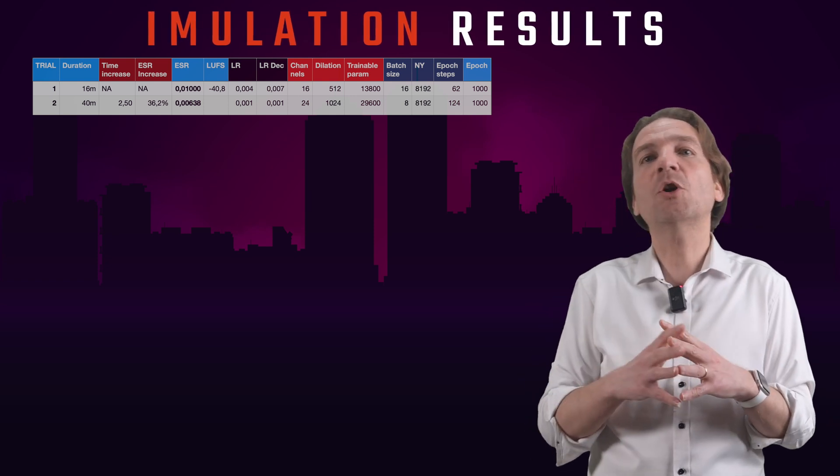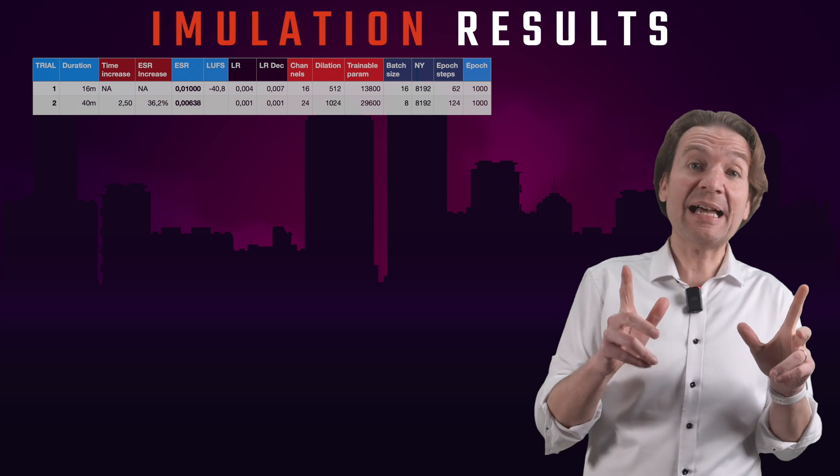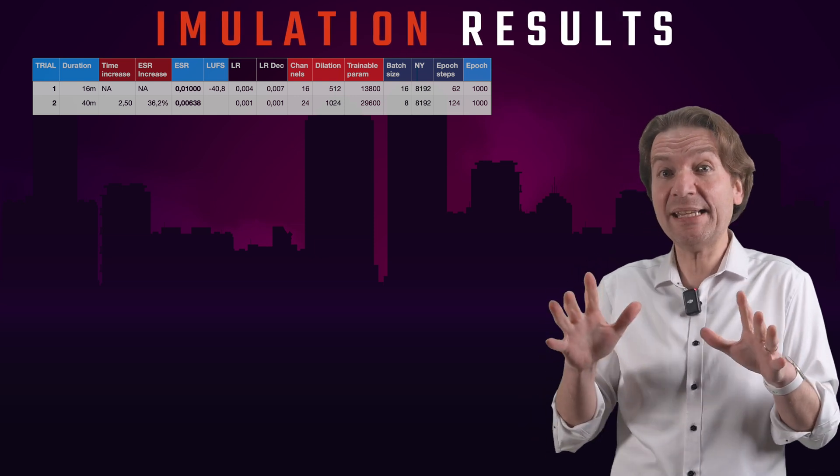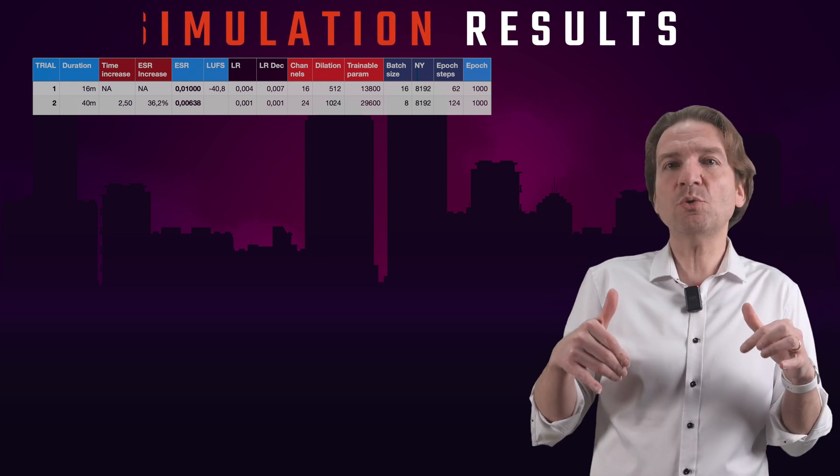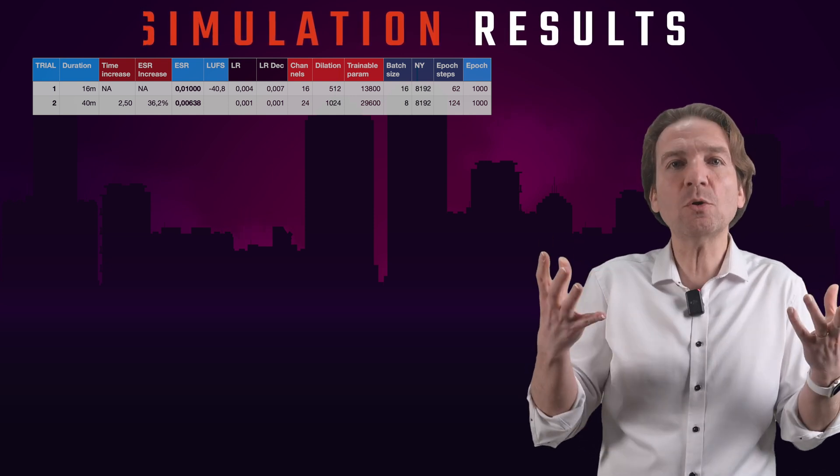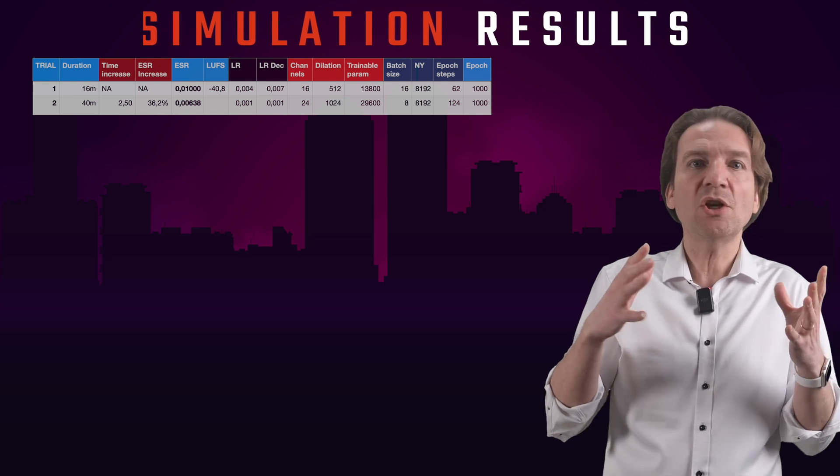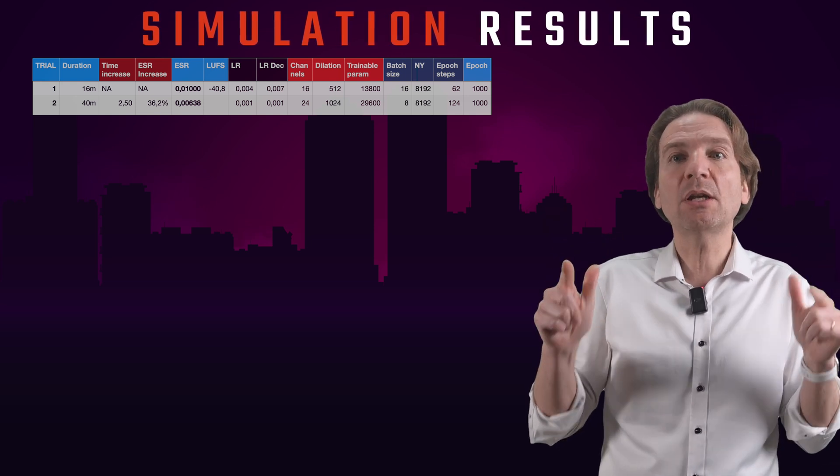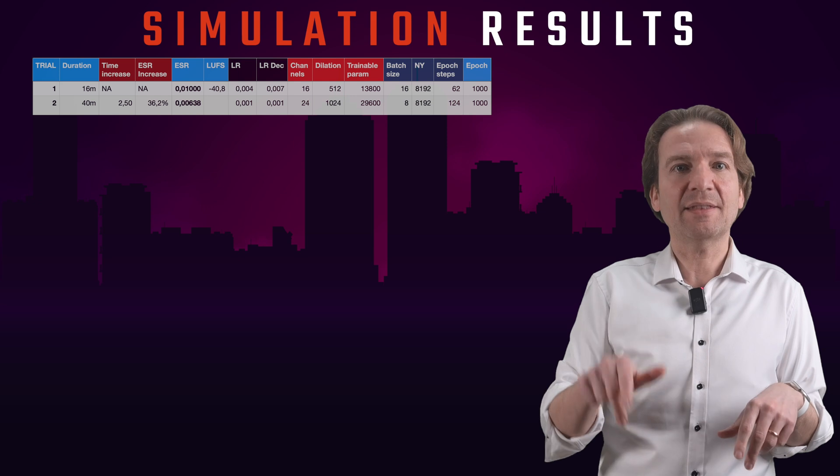As I said previously, if we decrease the learning rate, we are trying to increase the precision of our neural net, and therefore we need more cycles to converge to the target. So let's double the epoch with my trial number 3. These are results.